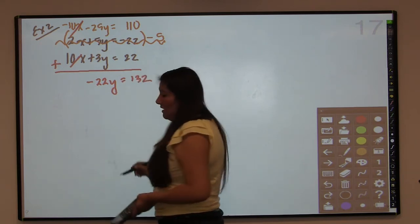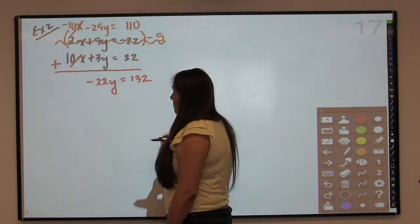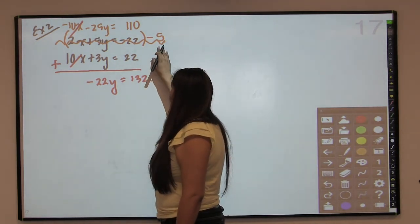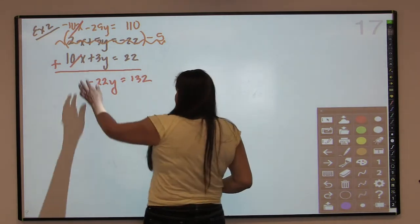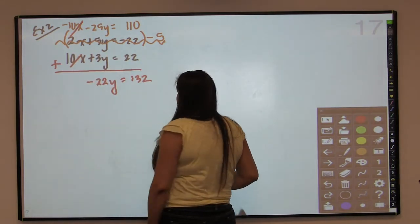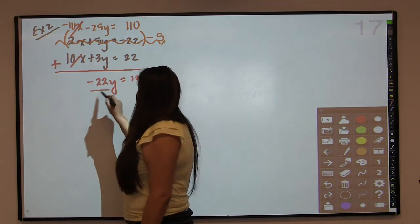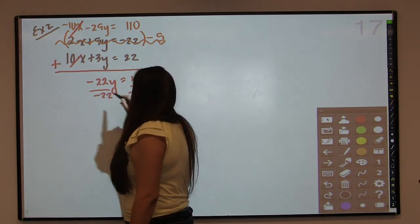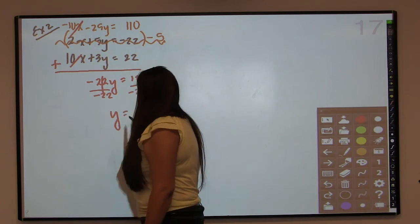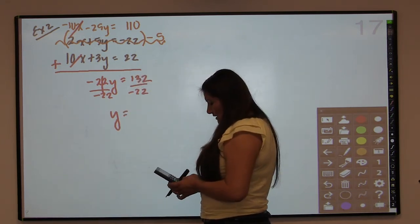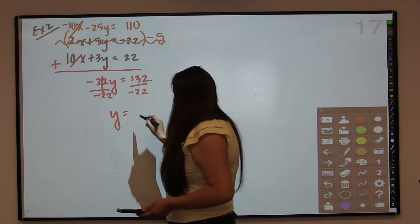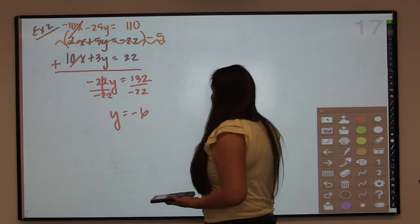And by the way, the most common mistake that students make in this elimination process is not multiplying everything by the negative 5. You don't just multiply the x, it's every single term in the equation. So then we're going to divide by negative 22. At this point, it becomes a lot like the previous example. And 132 divided by negative 22 is going to give us a negative 6. So y equals negative 6.